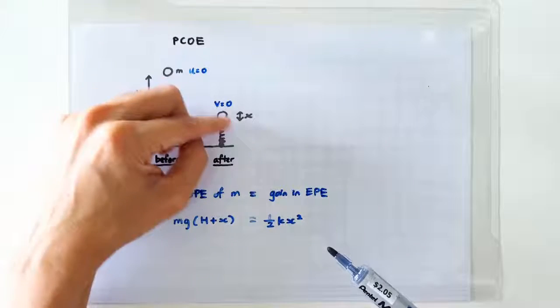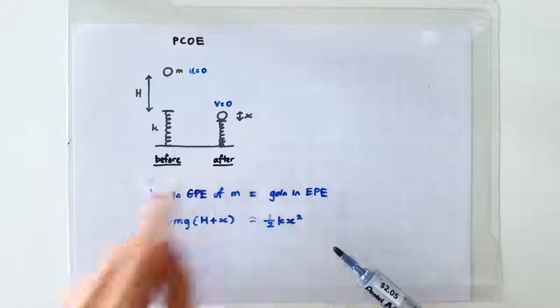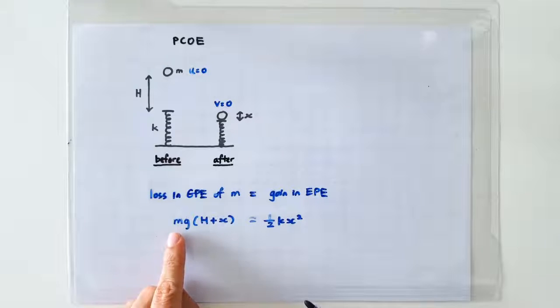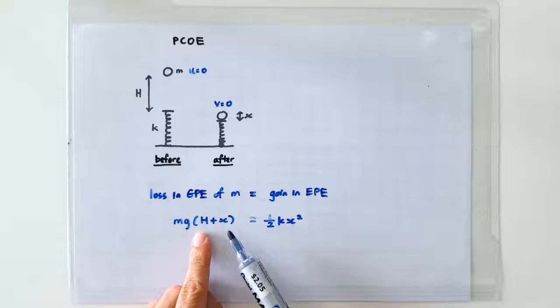The ball is going to drop through a total vertical distance of h plus x between these two instances. So the loss in GP should be written as mg(h + x).